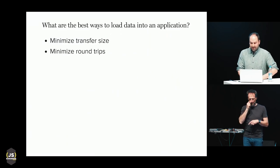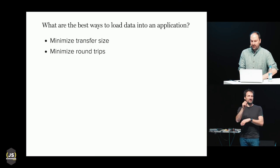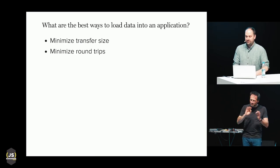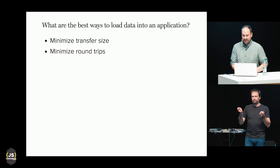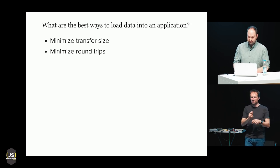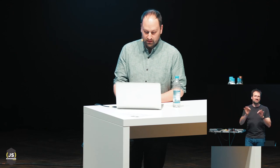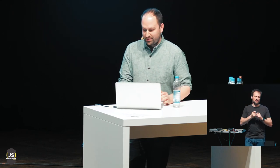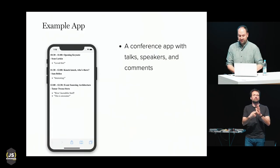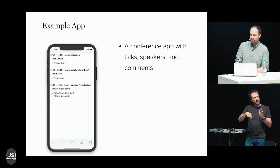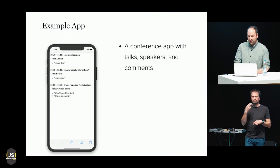So this talk is about different ways of loading data in a web application and the tradeoffs involved. Ideally, we want to minimize the transfer size and the number of round trips before we can display something. I'm going to use this simple app as an example — it's displaying information about JS Congress and will list out the talks, speakers, and comments.